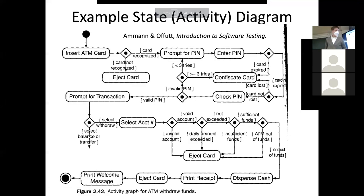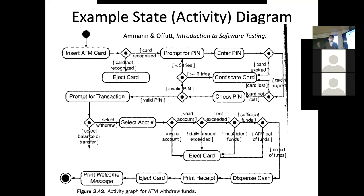So we're continuing our discussion of path coverage. We had talked about this ATM example and the idea of covering these states. The system has these transitions under different circumstances — like the card not being recognized, a card that's been lost or expired, or an invalid PIN occurring. These things in the rounded rectangles are states of the system. It's waiting for a PIN here; here's a state where the user is entering the PIN; here the card has been ejected and it's ready for user pickup; or it's printing a receipt. These are the states it can be in.